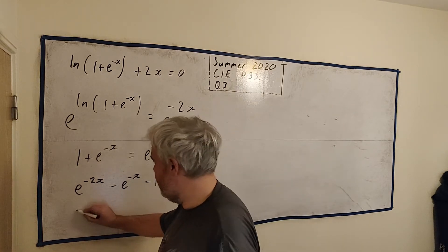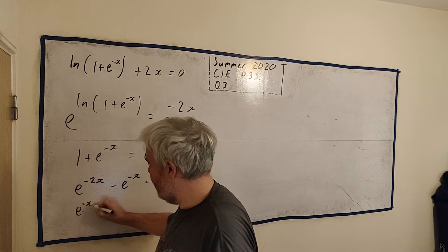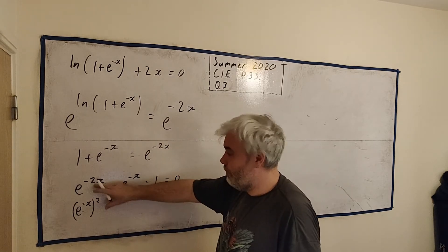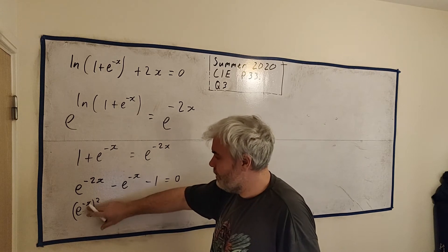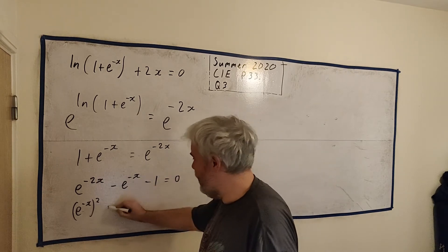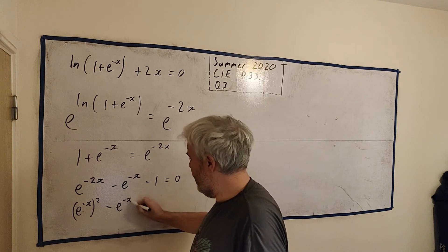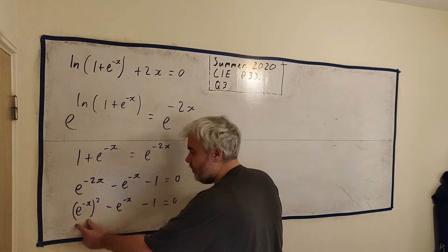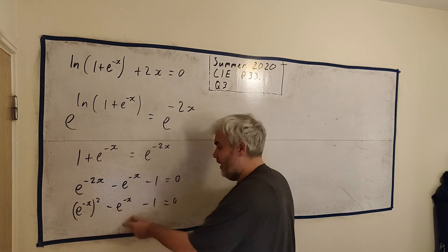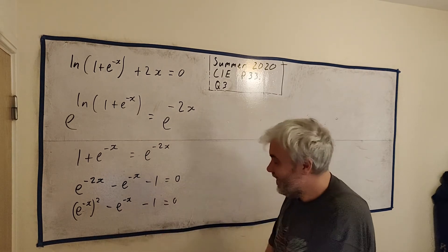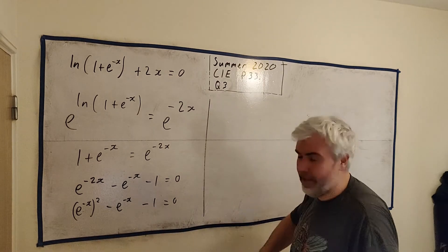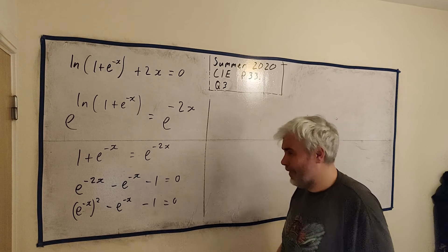That is now expressed as a quadratic. Or maybe they would like us to take one more step. You could just write it like this. (e^(-x))^2. Because that's the same thing. That's how powers work. 2 multiplies by this, and 2 is already multiplied by this. This is minus e^(-x). And this is minus 1. Like I said we have something squared, we have that something, and then we have none of that something. That's what a quadratic looks like.